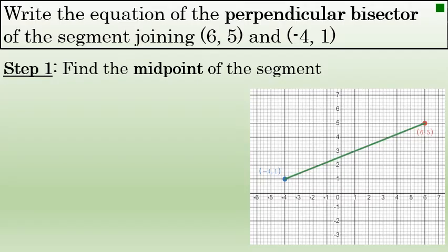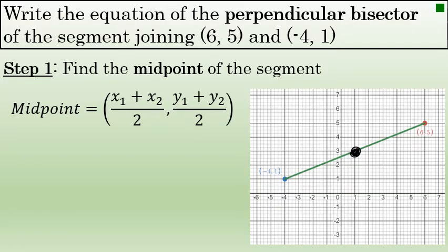The first step in finding the equation of the perpendicular bisector is to find the midpoint of the segment — the point that's exactly halfway between the two endpoints. We can do this whether or not we have graphed the segment. It's pretty easy to estimate the midpoint just by looking at the segment, but if the endpoints were very far apart, fractional, or even irrational, it would be difficult to identify that exact midpoint without doing a little math. The midpoint formula provides a way to fairly easily find the midpoint between any two points.